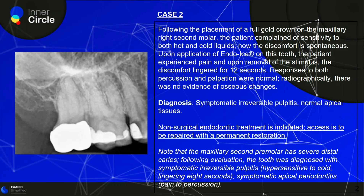Endo-ice is used for cold testing and the patient is experiencing pain; when the stimulus is removed, there is lingering pain of 12 seconds. This rules out reversible pulpitis, where there would be no pain after the stimulus is removed and it would not linger this long. Responses to both percussion and palpation were normal, meaning it has not extended to the periapical area. Radiographically, there was no evidence of osseous changes. The diagnosis is symptomatic irreversible pulpitis with normal apical tissues.